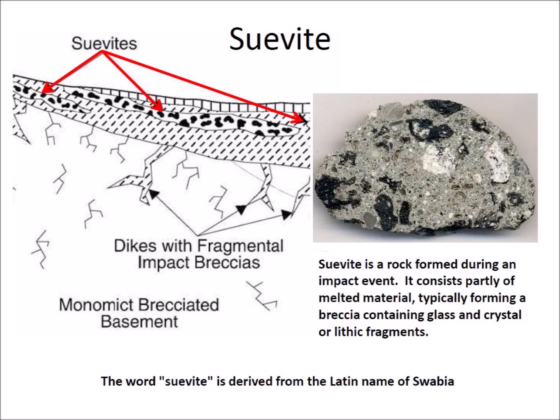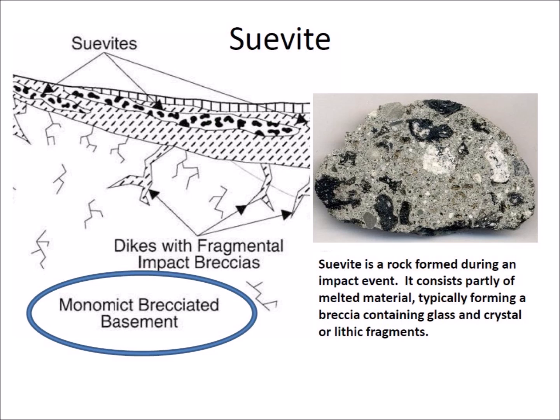Suevite is a rock formed during an impact event. It consists partly of melted material, typically forming a breccia containing glass and crystal or lithic fragments. The word suevite is derived from the Latin name of Swabia, a region in southwestern Germany. The term monomict brecciated basement means a foundation layer of broken rocks, all of the same type, cemented in a fine matrix. A conglomerate where the clasts represent more than one rock type is termed polymict, while one where the clasts are of a single rock type is monomict.